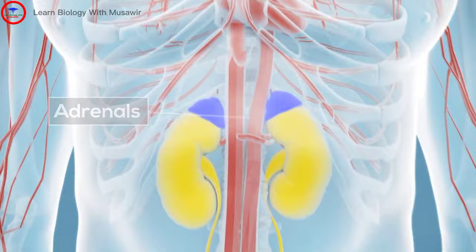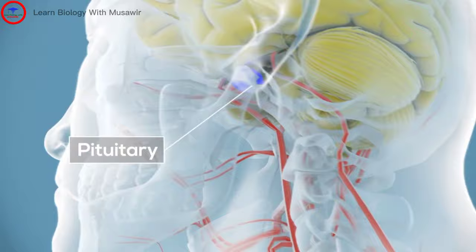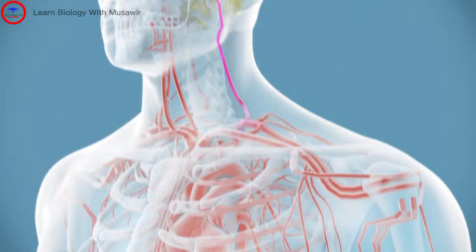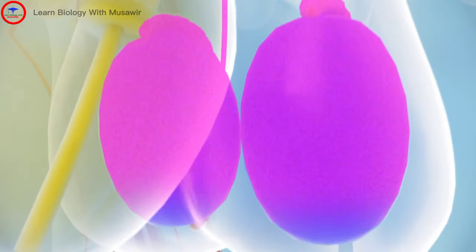Testosterone production is regulated by the pituitary gland, the master gland, which sits at the base of the brain. The pituitary gland releases a hormone called luteinizing hormone, LH, which travels via the bloodstream to the testes.